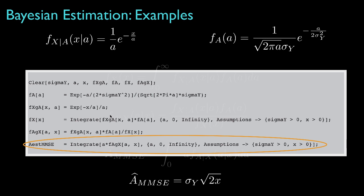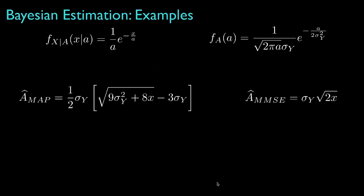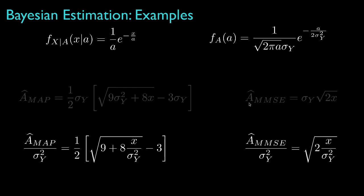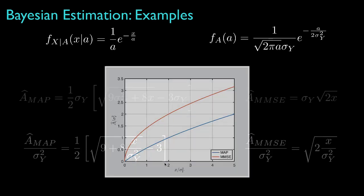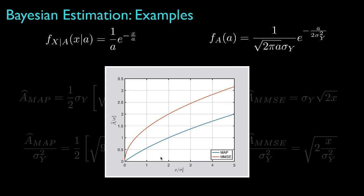The MMSE estimator turns out to be sigma_y times the square root of 2 times the observed value. For comparison, we can see the difference between the two estimators. To get a graphical comparison, we normalize the observation and estimate by the variance parameter sigma_y squared, giving two expressions relating the normalized observation to the normalized estimate. Plotting the normalized estimators shows that the minimum mean square error estimator, shown in red, will provide a larger estimate than the MAP estimator.